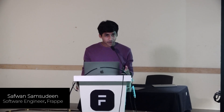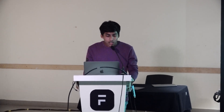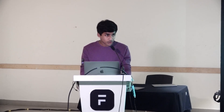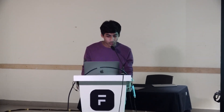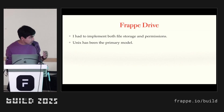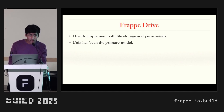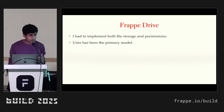Today I'm going to be talking about Frappe Drive. This is the project I've been working on for the past two or three months. Frappe Drive is our cloud storage solution. We have actually been working on it for years, but we are yet to release a public version. During the course of my work, I had to implement both file storage and permissions. There are many different ways of implementing this, and I read about many different design philosophies. The one we finally implemented is Unix — and that's what we'll be talking about today: how Unix manages file storage and permissions under the hood.